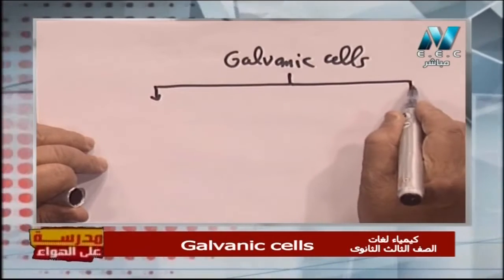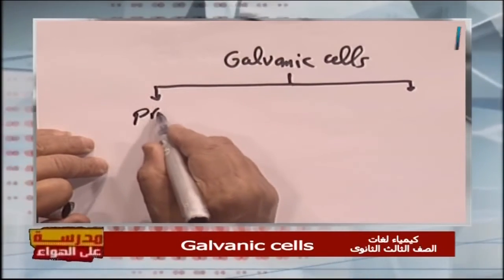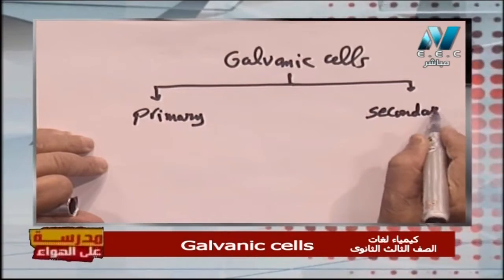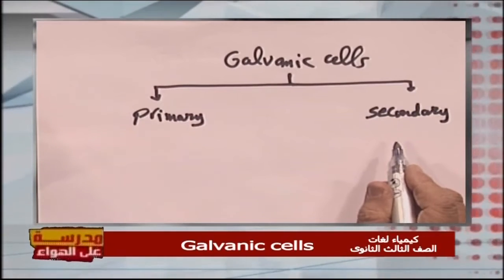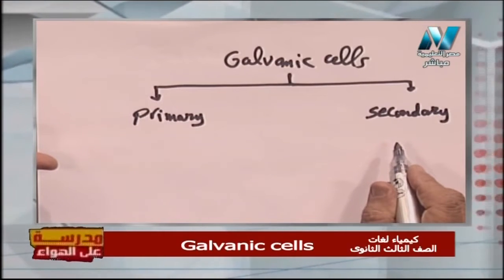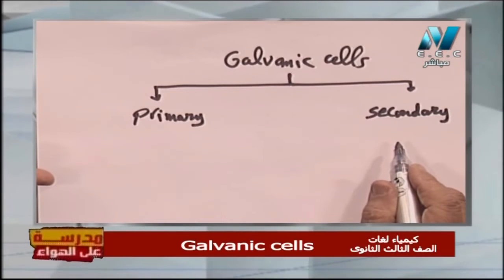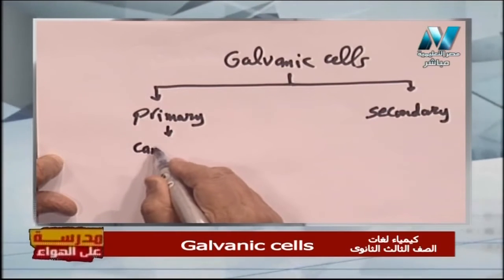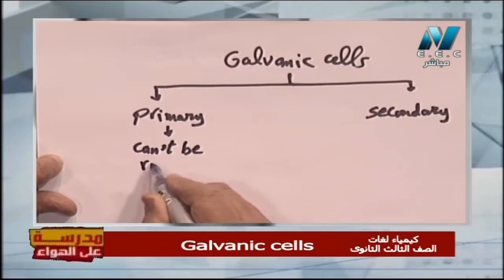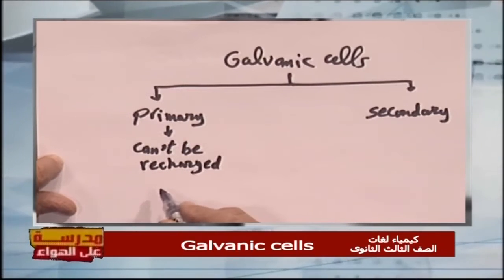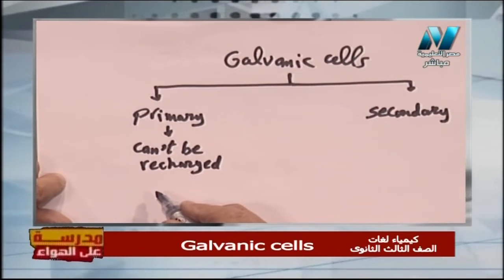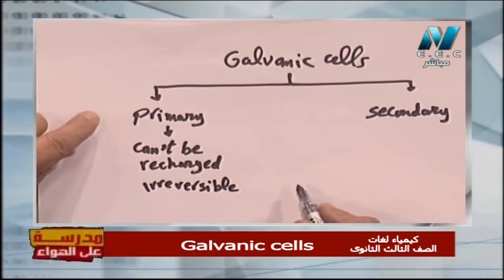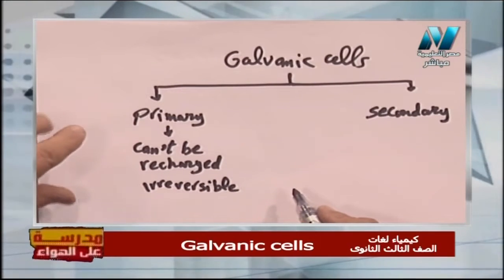Galvanic cells can be divided into two types: number one, primary galvanic cell, and number two, secondary galvanic cell. We know that the reaction in a galvanic cell is a spontaneous oxidation-reduction reaction which gives energy — chemical energy converted into electric energy. The reaction in a primary cell is irreversible; it can store energy as chemical energy and we get it as electric energy, but we cannot recharge the cell once again.